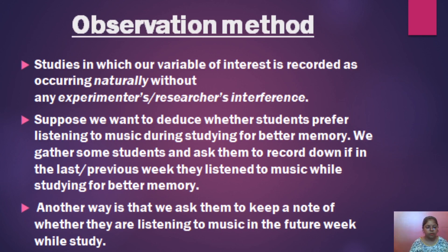There are different types of observation: participant and non-participant, systematic and unsystematic, scientific, structured and unstructured, natural and laboratory observation, open and hidden observation, direct and indirect observation, and covert and overt observation. These are the different types of observations which we consider for different methods of study.